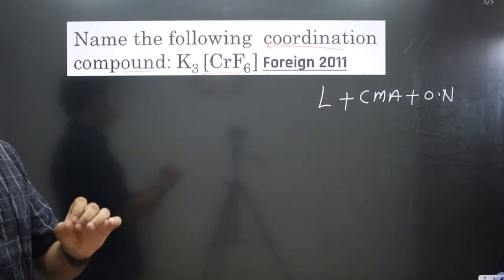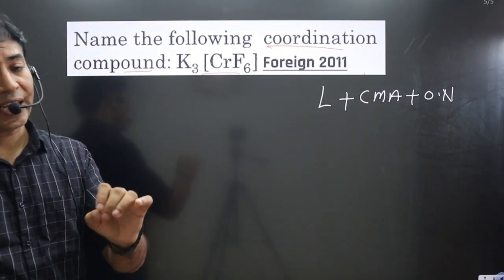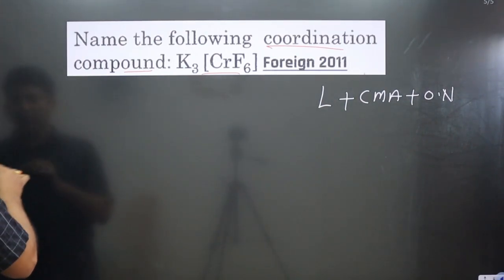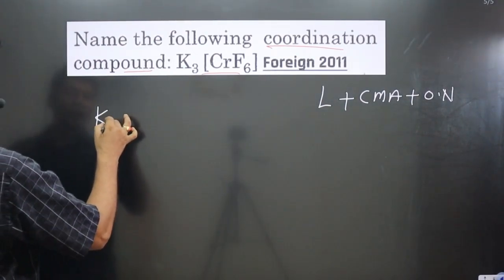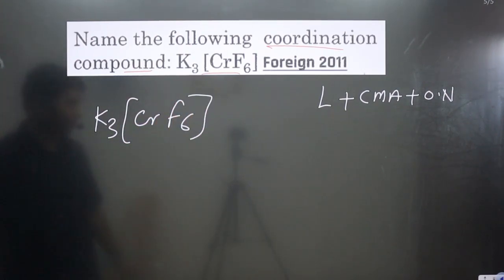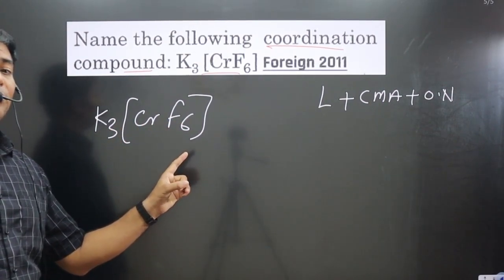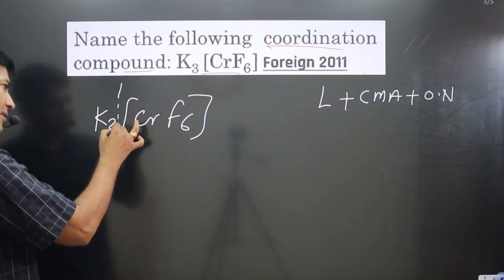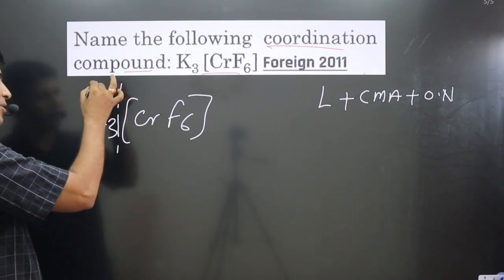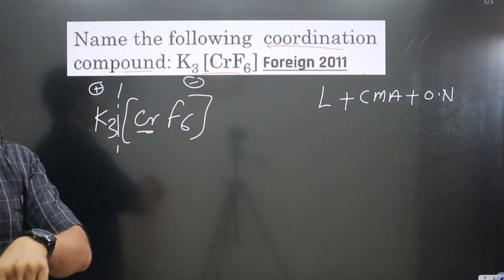The second important point: always identify whether the central metal atom is present in a cationic complex or an anionic complex before writing the name. In our complex, K₃ is the counter ion, Cr is the central metal, and F₆ are the ligands. Species inside the coordination sphere cannot be broken apart, but the counter ion can. The counter ion is always positive; the complex ion here is negative.